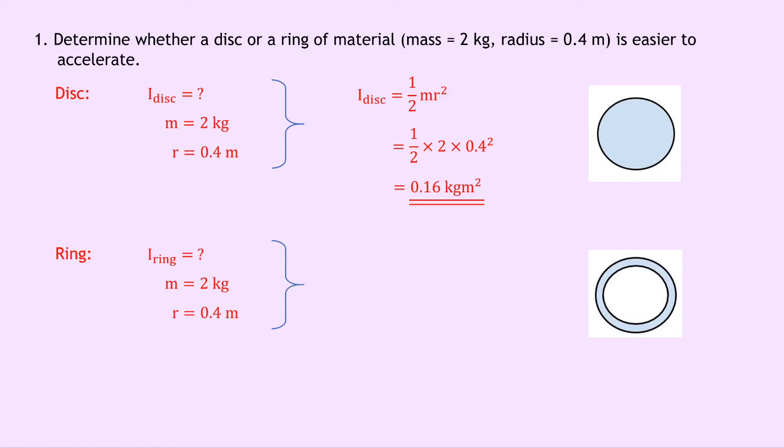This time our relationship for the moment of inertia of a ring, again you would get given this in the exam, is mr squared. So instead of a half mr squared it's just mr squared just like it is for a point mass. So substituting in the numbers we have 2 times 0.4 squared which is equal to 0.32 kilogram meter squared.